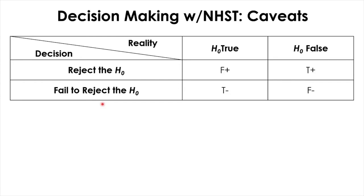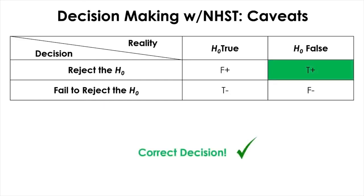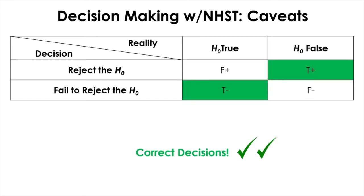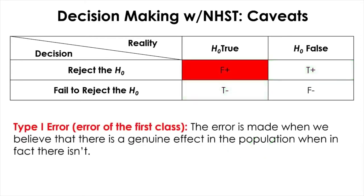Under this scheme, we are making correct decisions in two cases: when we reject the null and the null is indeed false in reality — that is a correct decision. However, if you reject the null when the null is true in reality, then you just made an error called a Type 1 error. This is when you claim that there is something when in fact there is nothing — basically a false alarm.